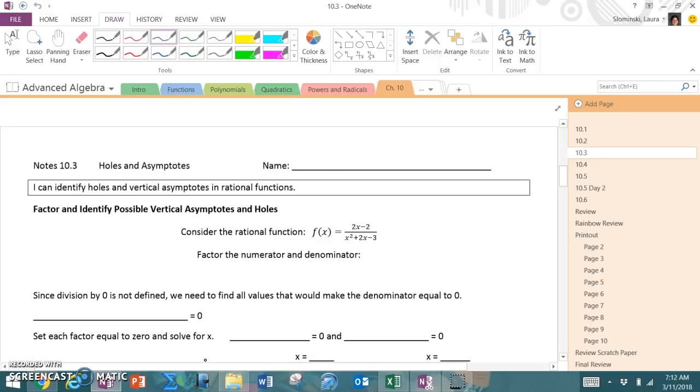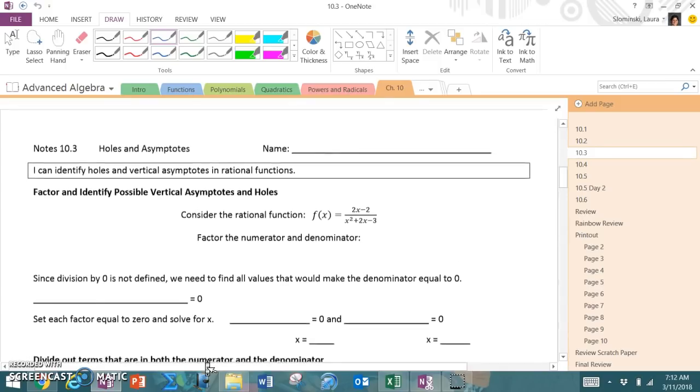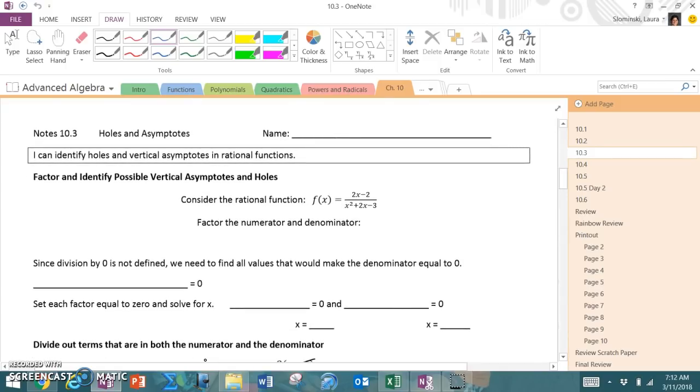So in sections 10.1 and 10.2, we looked at how to graph the function 1 over x, and what happens if we change it to a over x, if that top number changes or becomes negative, and also shifting it left and right. We said that f(x) equals a over x begins as this graph with a horizontal asymptote at y equals 0 and vertical asymptote at x equals 0.